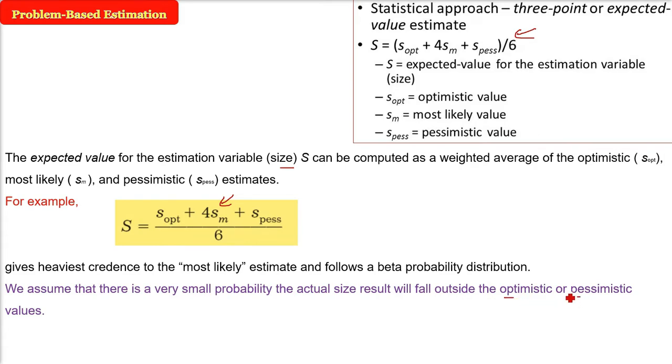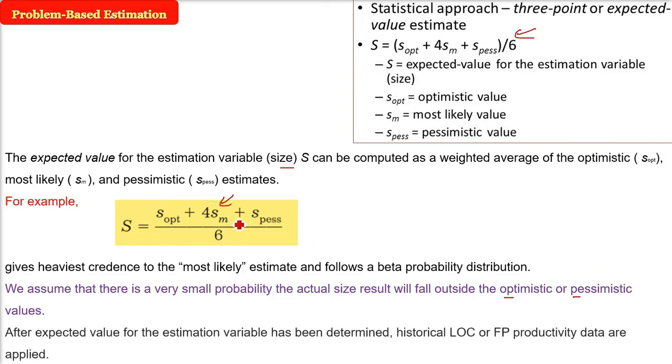We assume that optimism and pessimism are minimum and maximum. Mostly the middle value will have more weightage. After the expected value for the estimation variable has been determined, historical LOC and FP activity data are then applied.